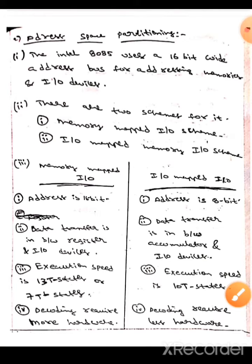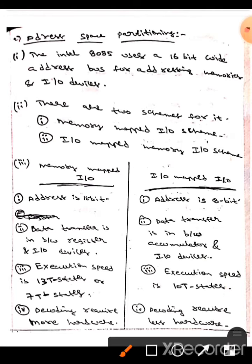In the memory-mapped I/O scheme, the address is 16-bit and data transfer is in between a register and I/O devices, whereas the execution speed is 30 states or 70 states, and here decoding requires more hardware.